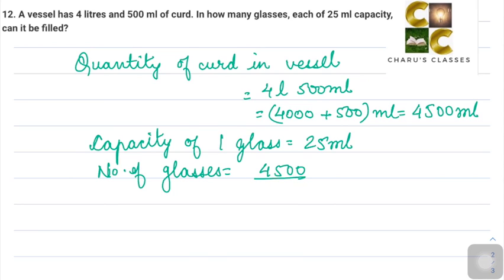Number of glasses is 4500 divided by 25. We can cancel it with 5. 5 fives are 25, and 5 nine-hundreds are 4500. Again with 5, this is coming as 180 glasses. If you like the video, please like, share, and subscribe. Thank you.